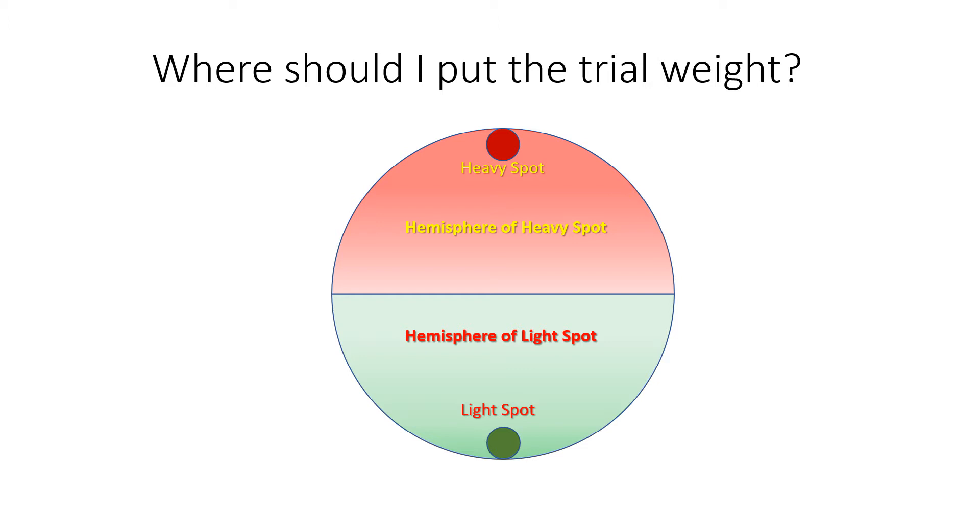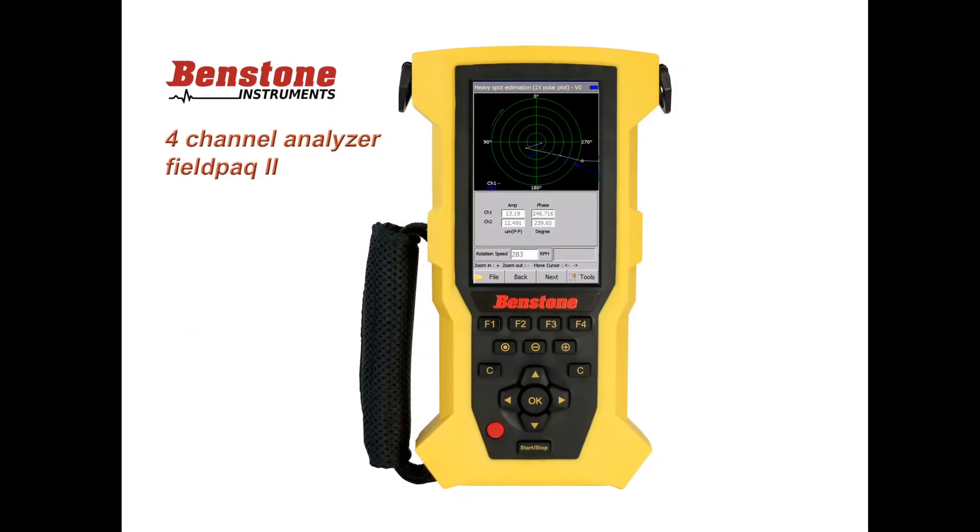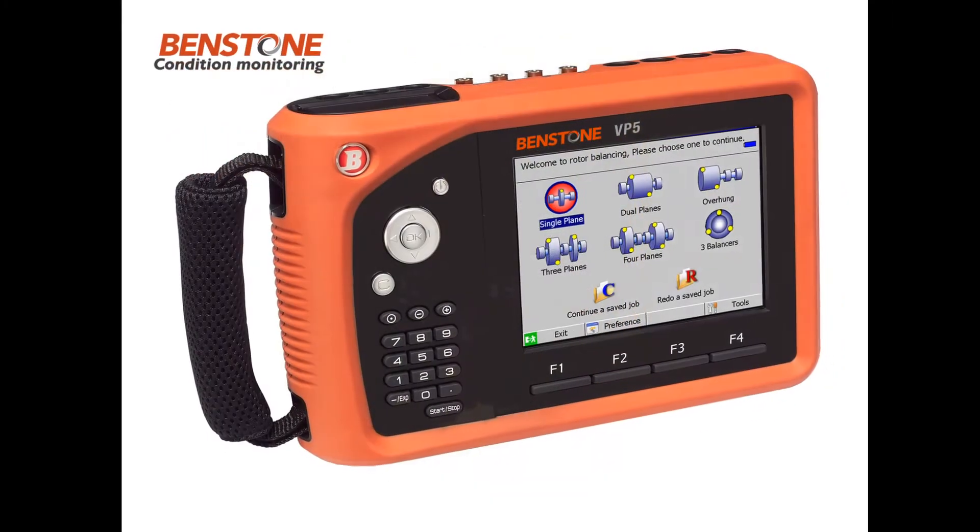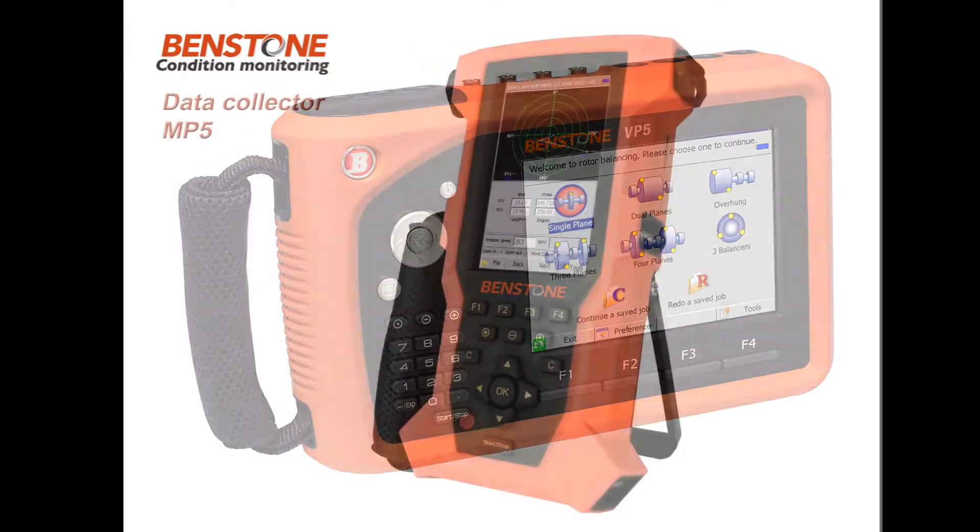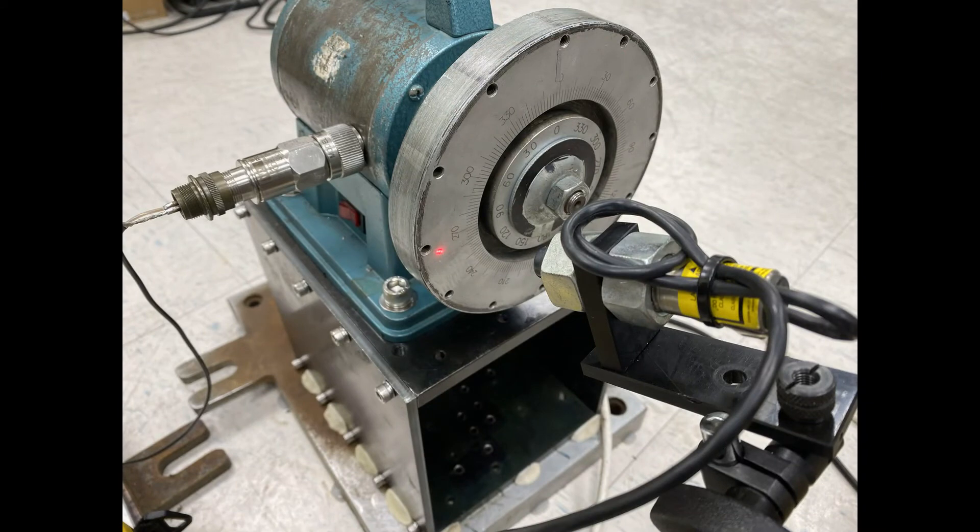We will use a balancing module of the portable analyzer Impact Elite for this demonstration. The same solution is also available from other portable analyzers, the Field Pack 2, and also the portable data collector, the VP5 and MP5. In this video we will use a bench grinder for this demonstration.